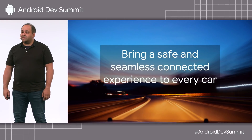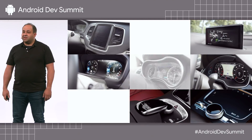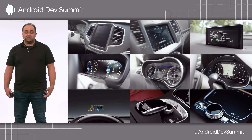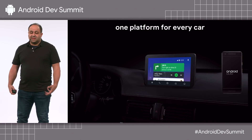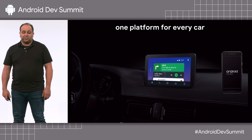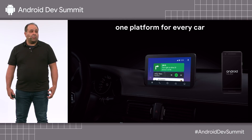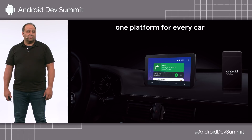That's easier said than done. There are dozens of different car platforms today, many different input types from touch screens to touch pads to rotary controllers, and many different screen shapes, sizes, and resolutions. You can see that vision at work in any Android Auto-compatible car. Drivers have access to their favorite apps right from their car's display, and developers build their app once without worrying about different makes and models, input controls, and screens.